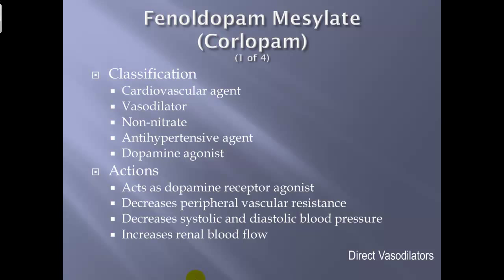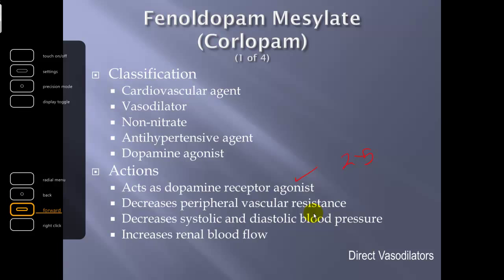Fenoldopam mesylate, or Corlopam. Classification: cardiovascular agent, vasodilator, non-nitrate, antihypertensive agent, and dopamine agonist. Actions: acts as a dopamine receptor agonist, stimulating specific receptor subtypes. Decreases peripheral vascular resistance, decreases systolic and diastolic blood pressures, and increases renal blood flow. By providing a dopaminergic response at 2 to 5 mcg loading doses, it increases renal artery blood flow, which increases glomerular filtration rate and supports kidney function.